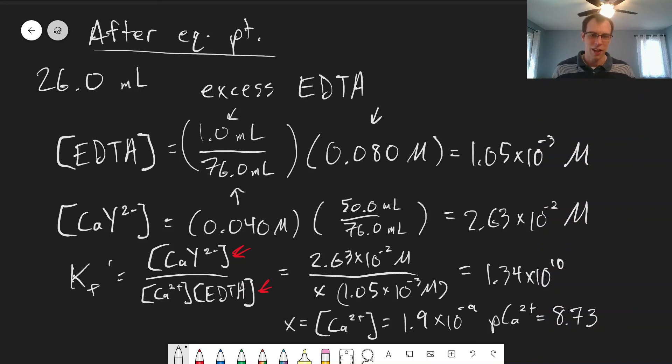This change in the concentration of metal ion is how we can observe the equivalence point - that's what we take advantage of to find the endpoint.